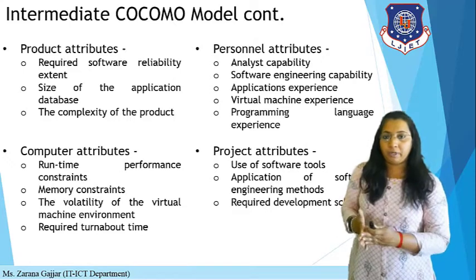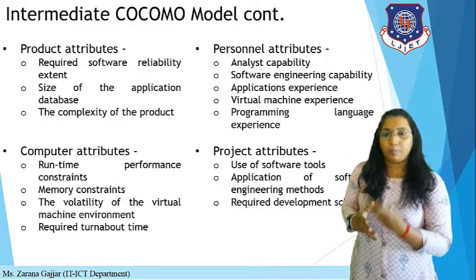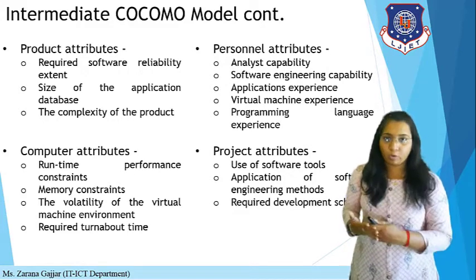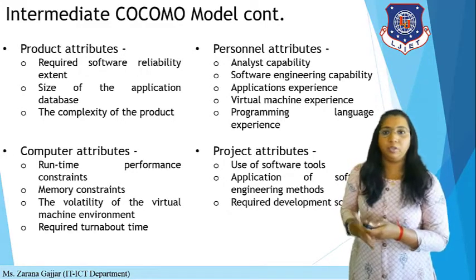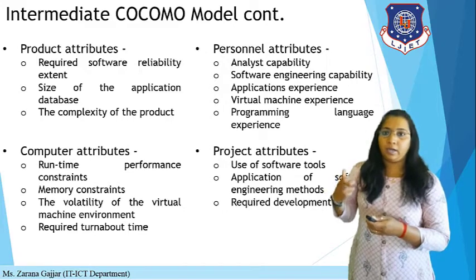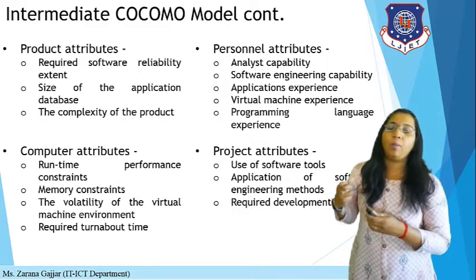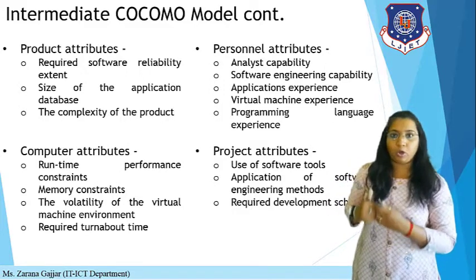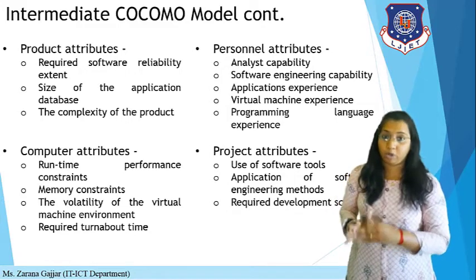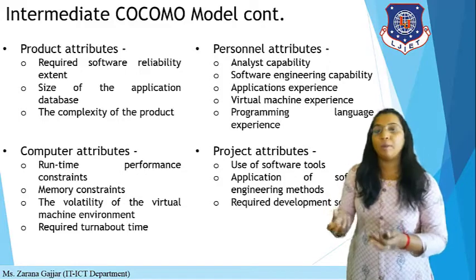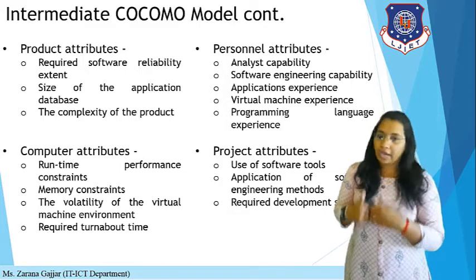The 15 attributes or parameters considered for accurate project estimation are categorized into 4 categories: product attributes, computer attributes, project attributes, and personal attributes. Product attributes include required software reliability, size of the application database, and the complexity of the product — these 3 parameters help calculate the product attributes.